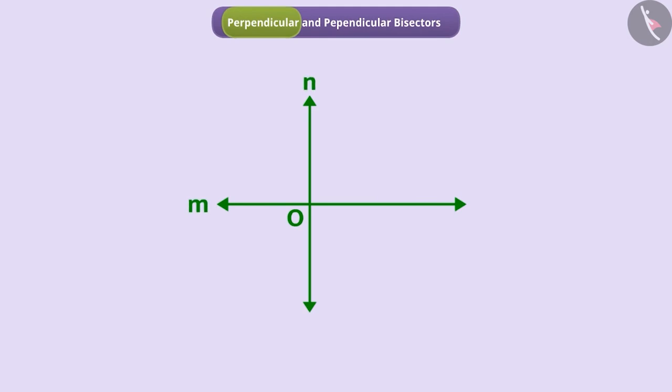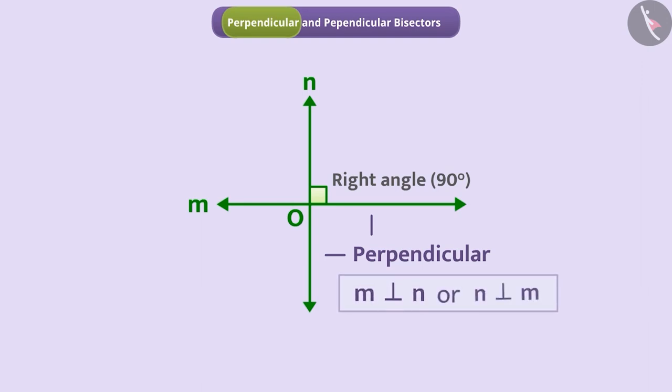When two lines such as M and N intersect each other such that the angles formed between them are right angles or 90 degree angles, then they are said to be perpendicular to each other. We show it using symbols either this way or this way.